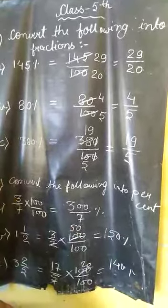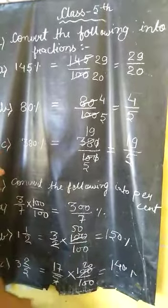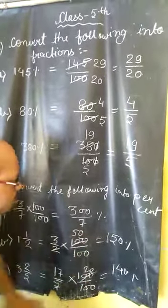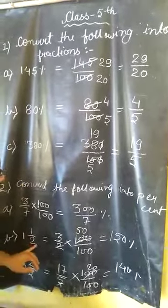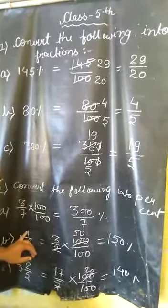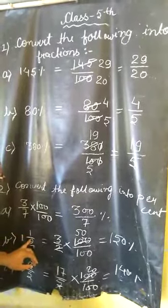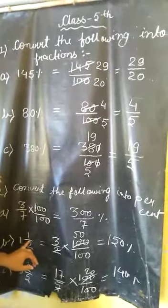We can write it as 150 upon 100, 150 percent. So 1 and 1 upon 2 means 1 complete and half. 1 upon 2 means half, which is 100 and half is 50, so it will be 150 percent.